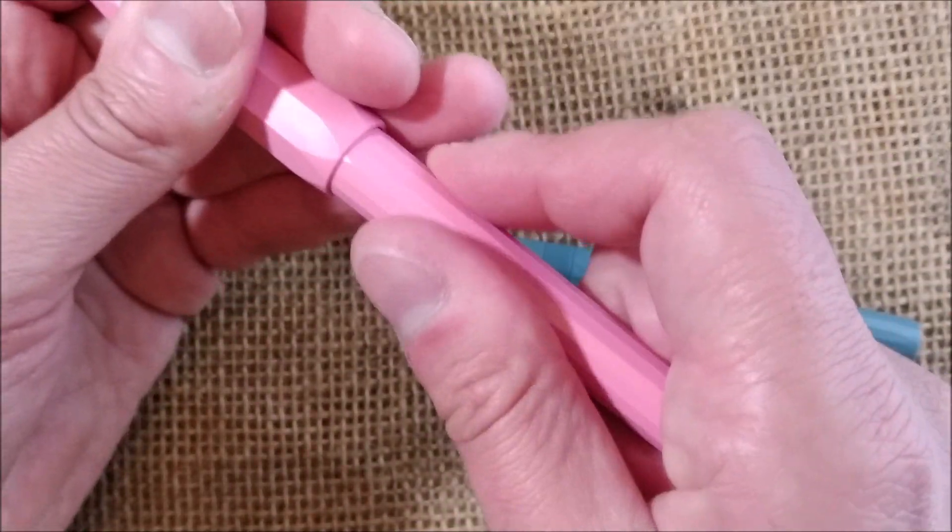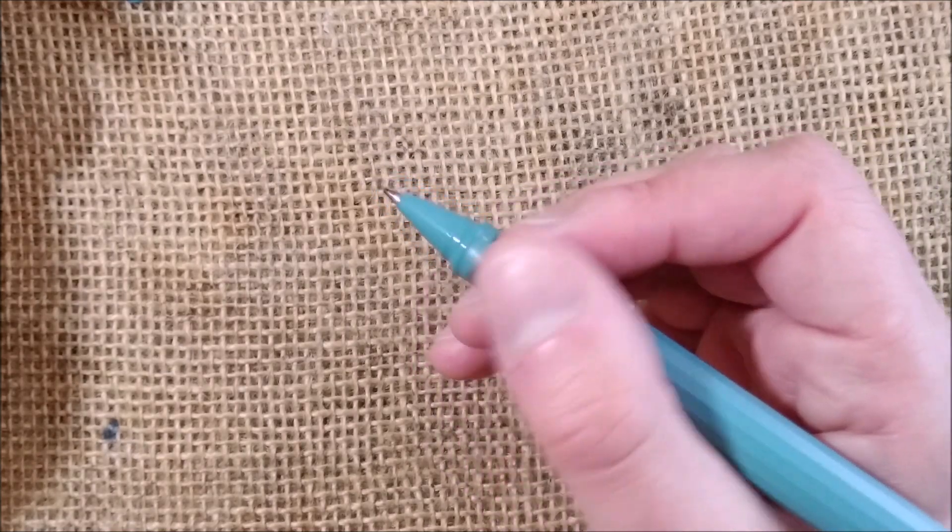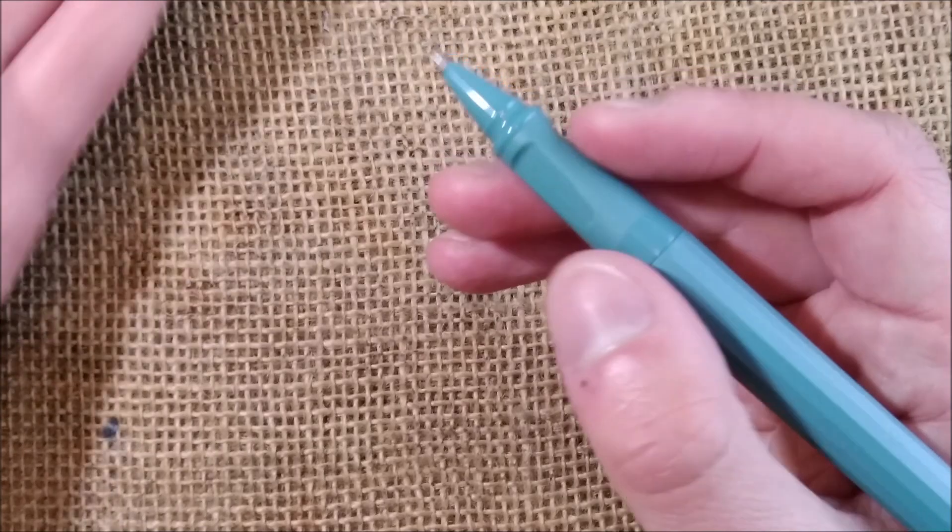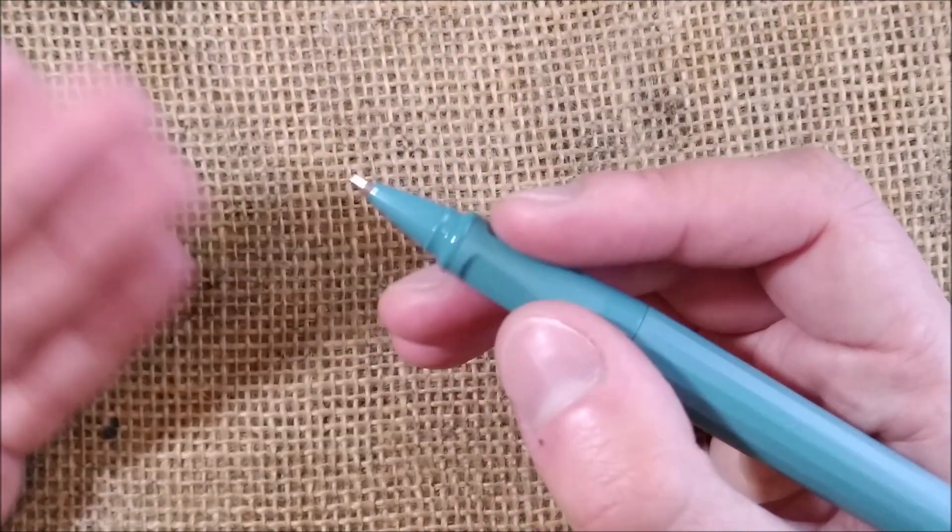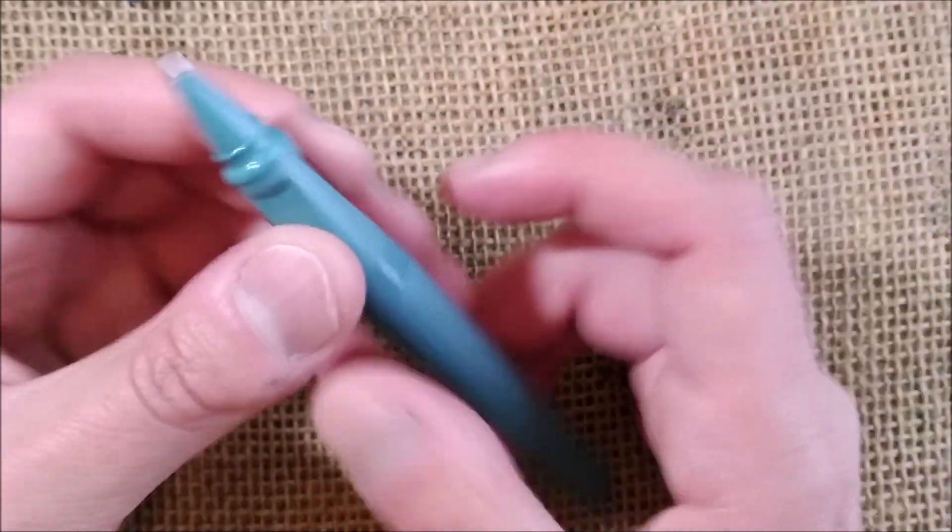In rollerball, it doesn't make that much sense, because it doesn't matter if you hold it like this, or like this, or like this. So there is no real use for that. But I think they just use the same kind of molding for both parts, and that's why it's like this.